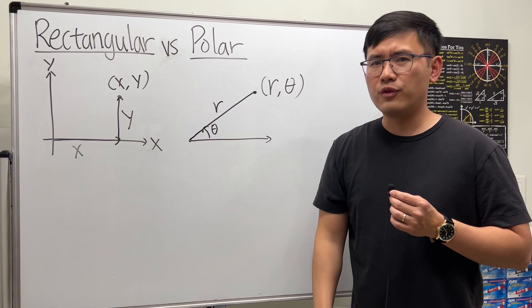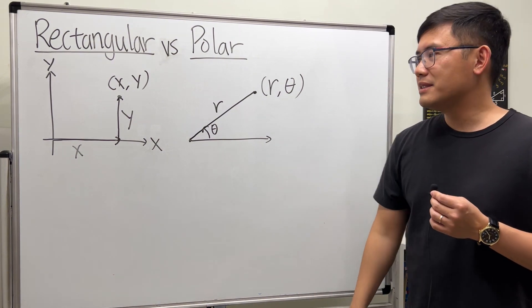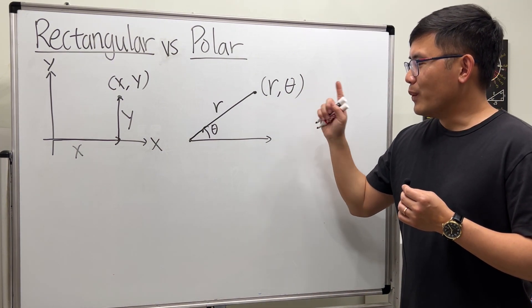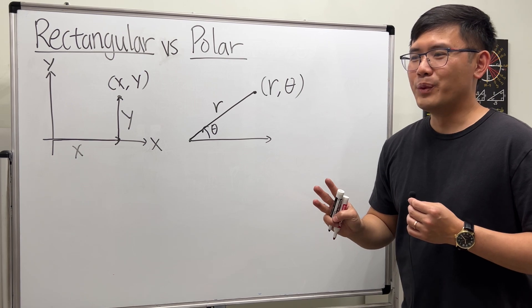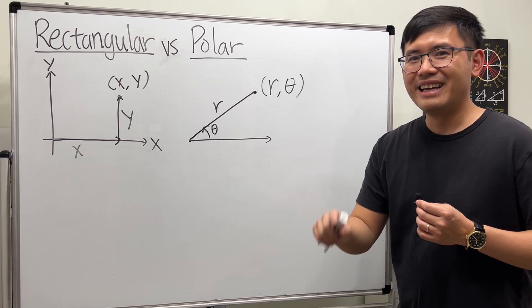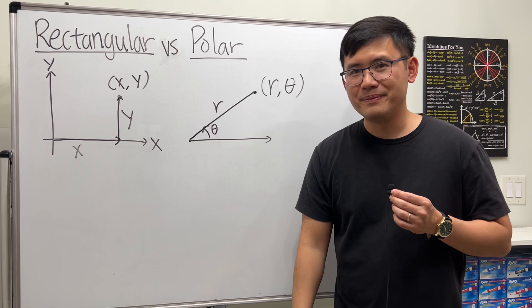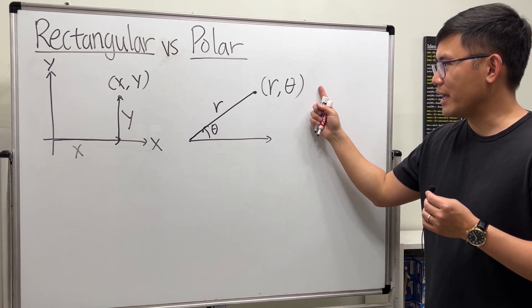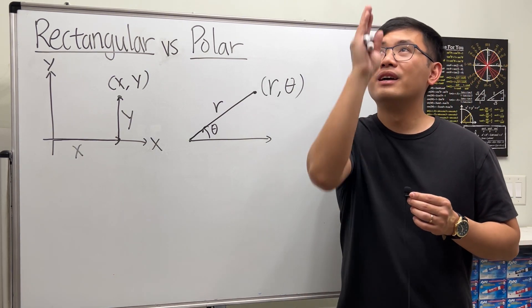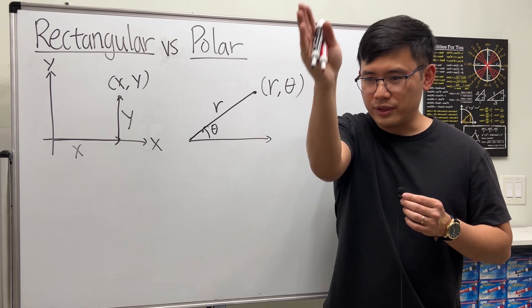Once we get into Calc 3, we'll be working with three-dimensional things. There's something called the spherical coordinate system. There's going to be one more rotation that we have to consider, starting from up and then you have to rotate it down.